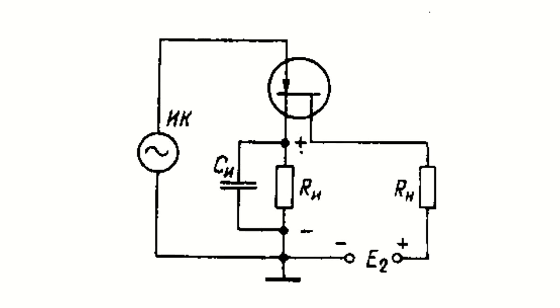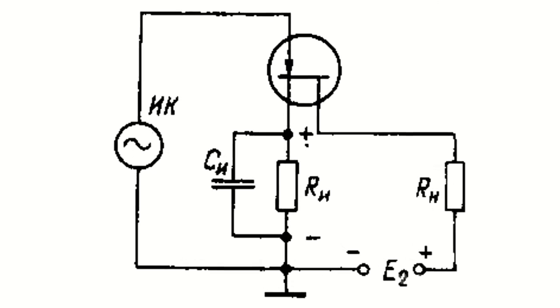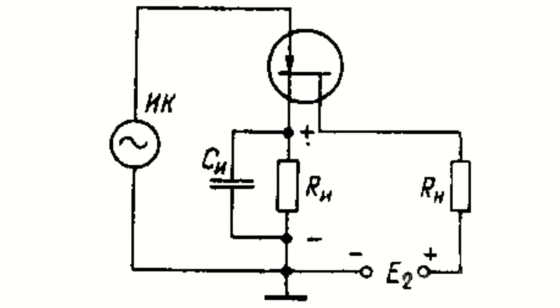Through the capacitor CS, the variable component of the drain current flows. The capacitance CS must have such a value that its reactance at the lowest frequency is much less than RI. Then there will be a low alternating voltage across CS. If the capacitor CS is absent or has insufficient capacitance, then RS receives a significant alternating voltage, which is supplied to the input in anti-phase — a negative feedback. The resulting AC voltage at the input of the transistor becomes lower and the gain decreases.